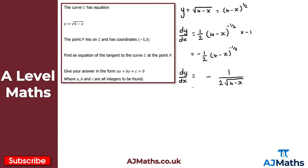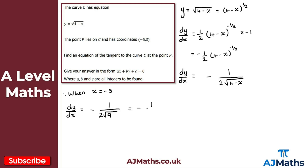To find the gradient, I evaluate dy/dx when x equals minus 5. Substituting in: dy/dx equals minus 1 over 2 times the square root of (4 − (−5)), which is the same as 4 plus 5, giving the square root of 9. The square root of 9 is 3, so dy/dx equals minus 1 over 6. So the gradient at this point is minus 1 over 6.